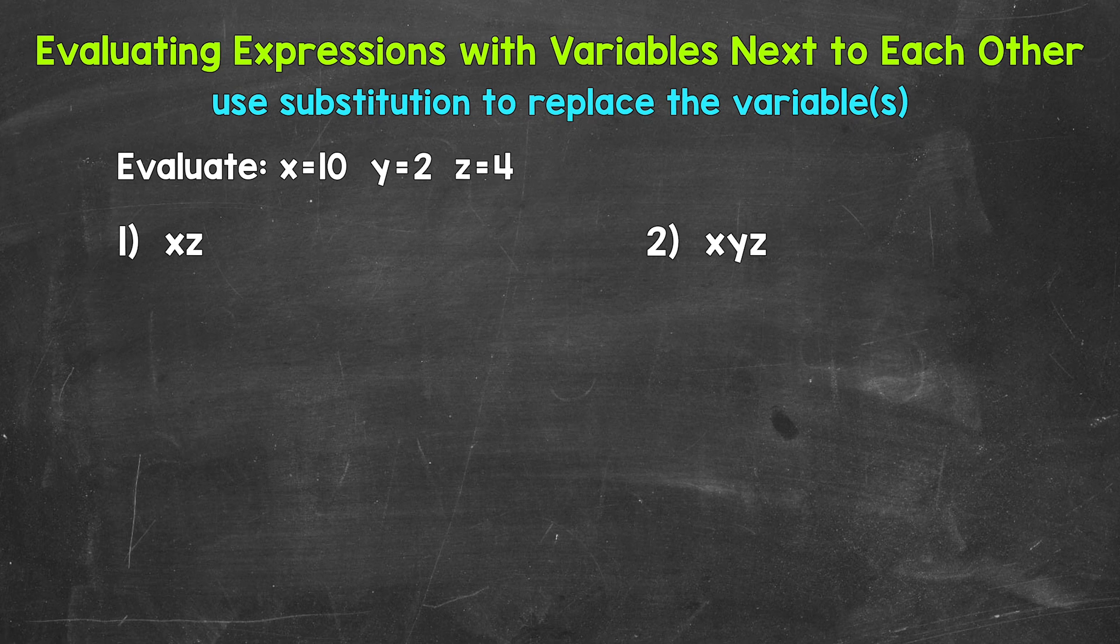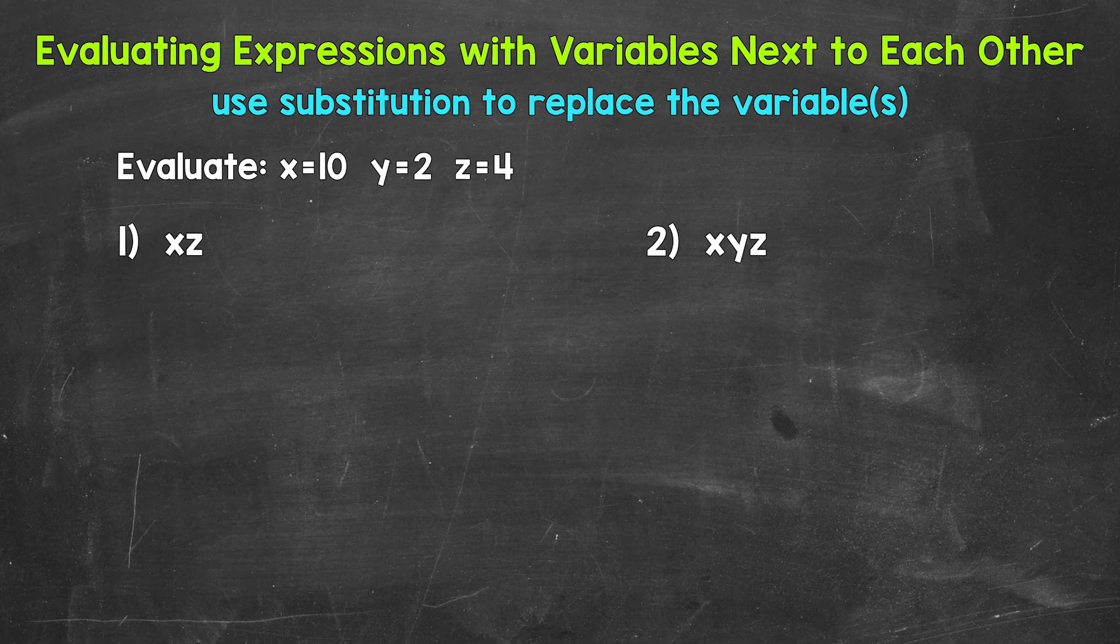Now we have variables next to each other. This just means they are being multiplied, so we have x times z. So whenever variables are next to each other, this represents multiplication. Now that we know this is multiplication, the first thing that we need to do as far as evaluating this expression is to replace or plug in the given values for the variables. This is called substitution.